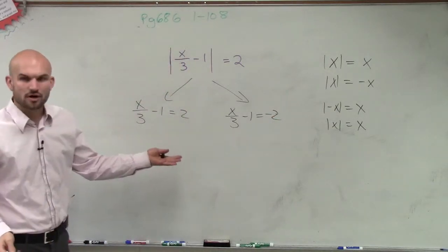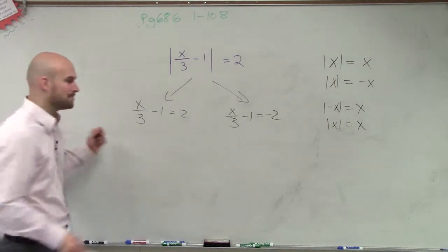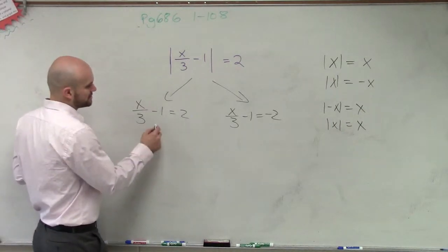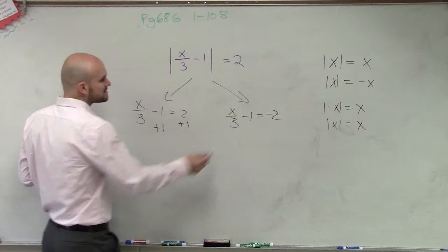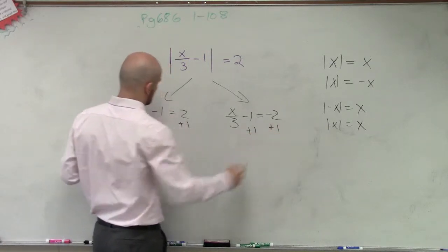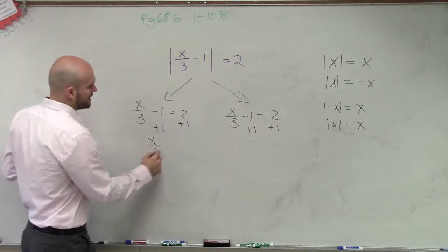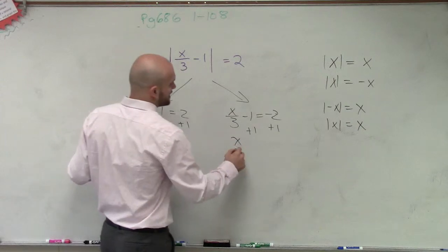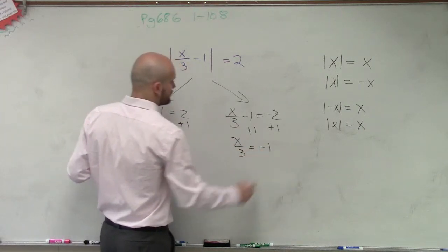So now we just simply solve by using our inverse operations and reverse order of operations. So I add 1 on both sides. That's going to remain the same. Then I have x over 3 equals 3, and here I have x over 3 equals negative 1.